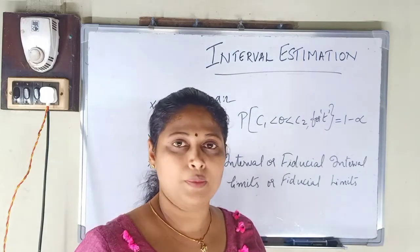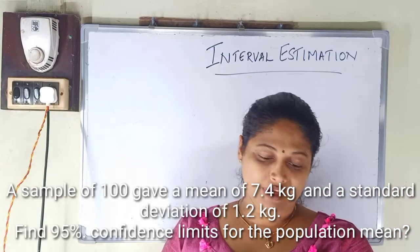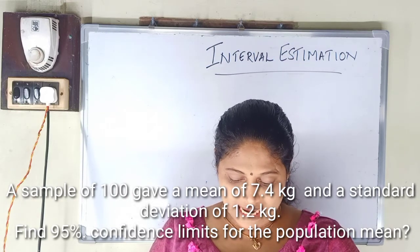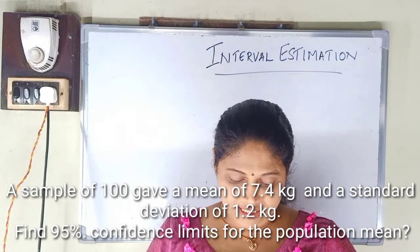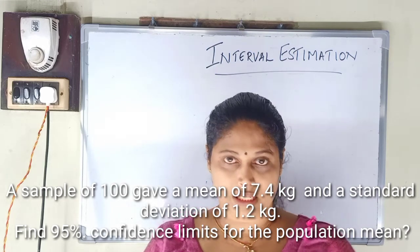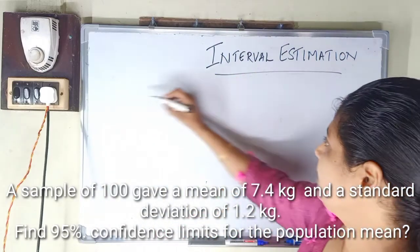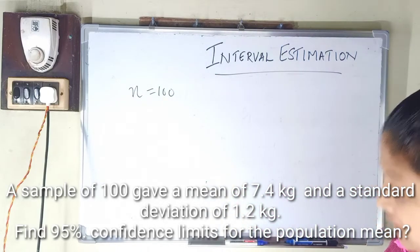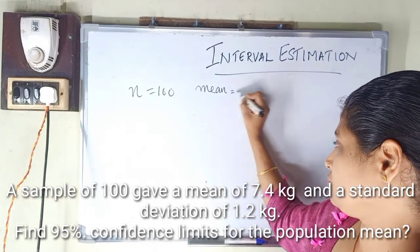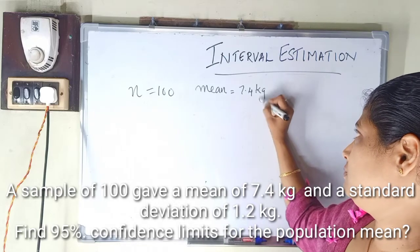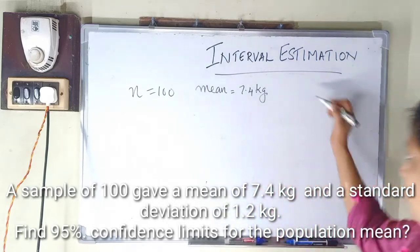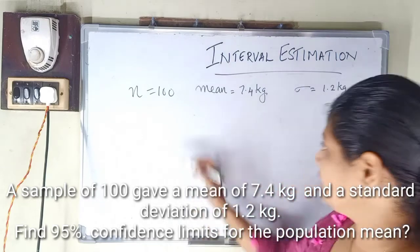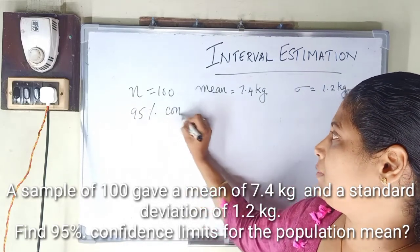Problem: a sample of 100 gives a mean of 7.4 kg and a standard deviation of 1.2 kg. Find 95% confidence limits for the population mean. So n equals 100, x-bar equals 7.4 kg, standard deviation equals 1.2 kg. Find the 95% confidence limit.